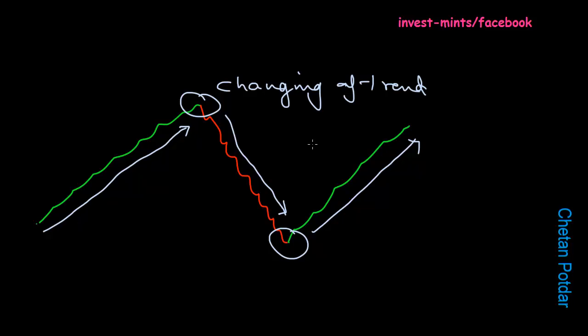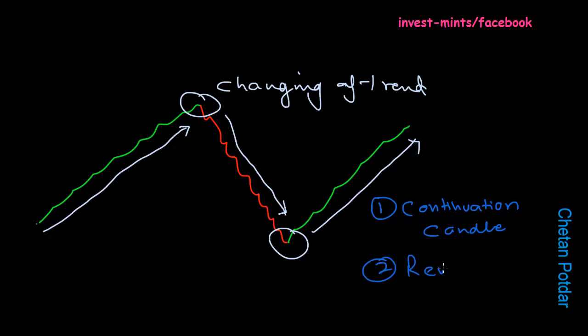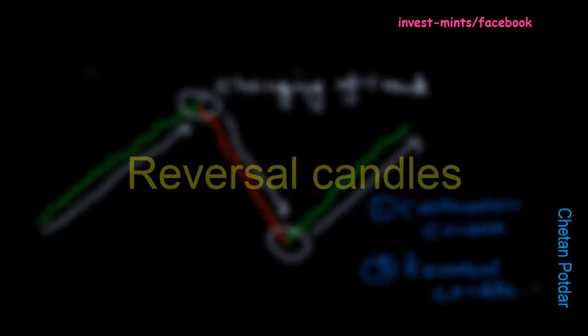Candles tell us two things. The pattern of candle is what we call as continuation candle, and the second type is reversal candles. According to me, reversal candles are the most important because they tell us where the markets are turning and changing direction — signifying whether we are going to continue making money or lose money. Let me go deep into what reversal candles look like.